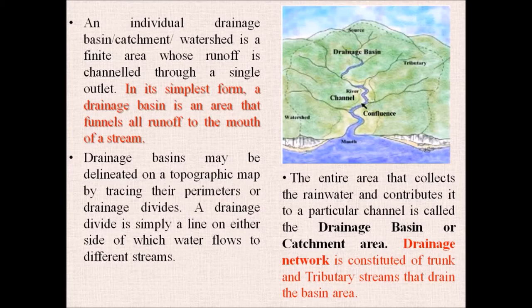The drainage network is constituted of the trunk and tributary streams that drain the basin area. The main or trunk stream flows through the basin, and tributary streams contribute their water to it. The points where tributaries meet the trunk river are called confluences.